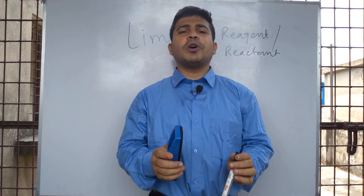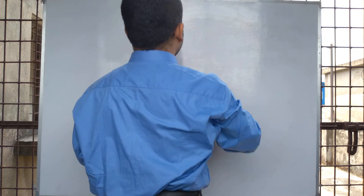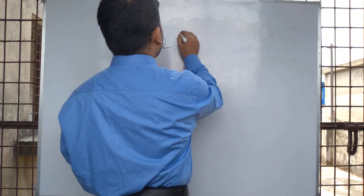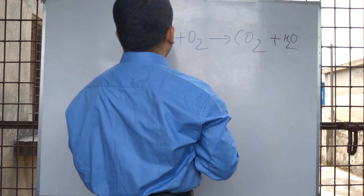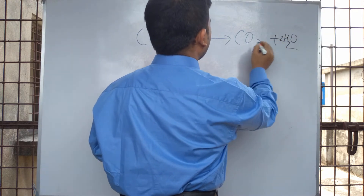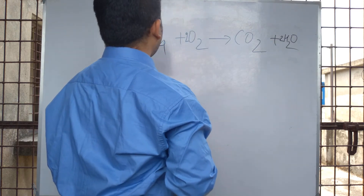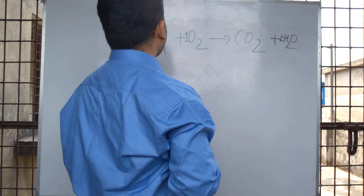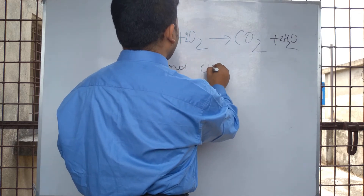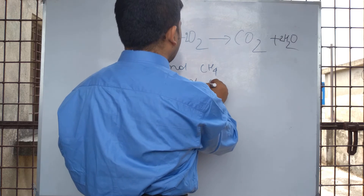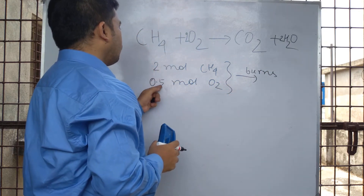Now we take an example to better understand what is a limiting reagent and limiting reactant. For example, we are taking the burning of methane gas in the presence of oxygen gas: CH4 + 2O2 → CO2 + 2H2O. The equation is balanced. Our problem is: 2 mol of methane and 0.5 mol of O2 are burned.